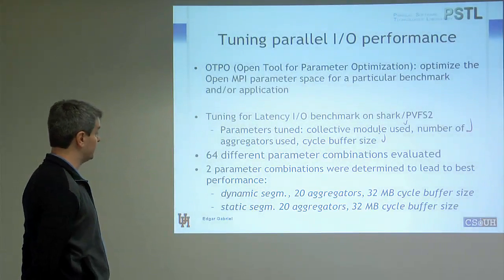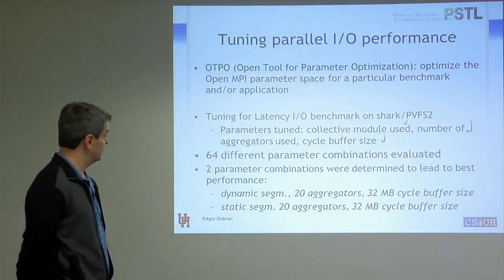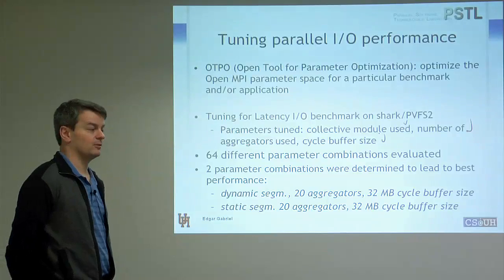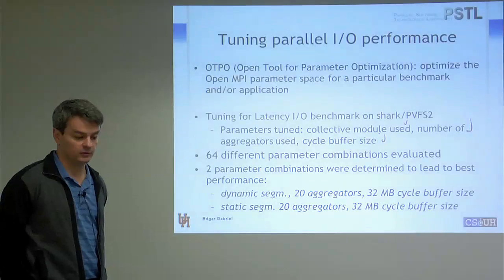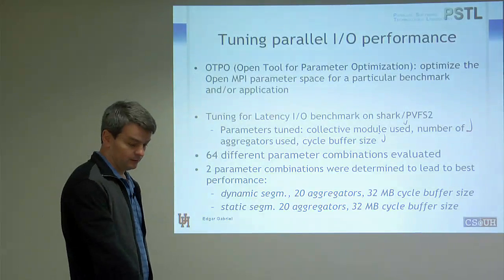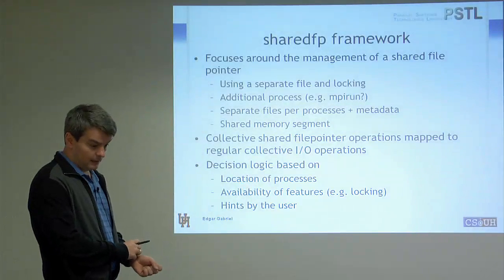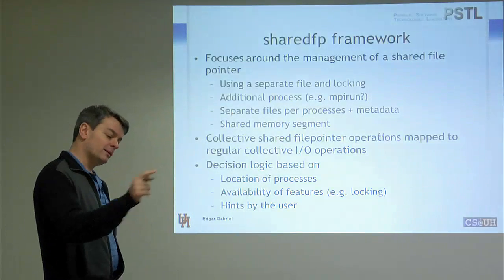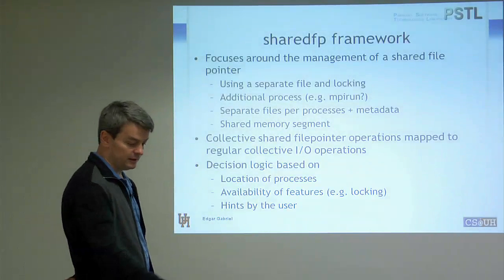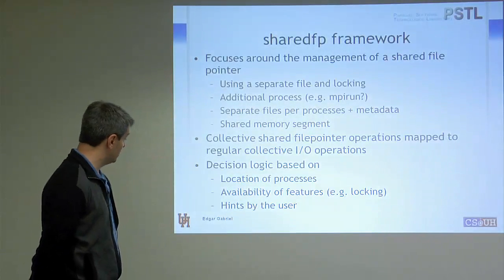We went a couple of steps further with some of these tuning scenarios. A student of mine focused on tuning OpenMPI MCA parameters — InfiniBand, shared memory parameters, collective parameters. Without changing anything else in your application, we saw partially performance improvements from 20% to 40%. Regarding the shared file pointer framework: MPI defines collective shared file pointer operations in an ordered manner, meaning data from process 0 comes before process 1, before process 2 — that's why they are called MPI_File_read_all_ordered rather than MPI_File_read_all_shared. You can truly map collective ordered operations using a shared file pointer to regular collective operations because you really just need to determine the initial position of the shared file pointer once.